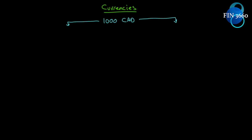Let's have a look at how we arrive at the futures price. I've already given you the formula for the futures price — that being the futures price is S₀ times e to the (R minus RF) times T. But how do we get there, and how do we prove that that's right using an arbitrage argument with currencies? That's a little bit difficult to do.